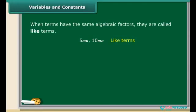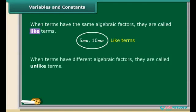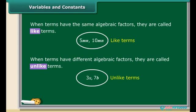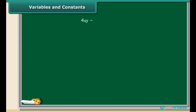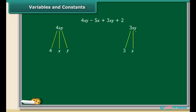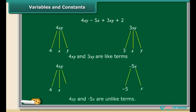When terms have the same algebraic factors, they are called like terms. When terms have different algebraic factors, they are called unlike terms. For example, in 4xy − 5x + 3xy + 2, the terms 4xy and 3xy both have the same algebraic factors x and y, so they are like terms. On the other hand, 4xy and −5x have different algebraic factors, so they are unlike terms.